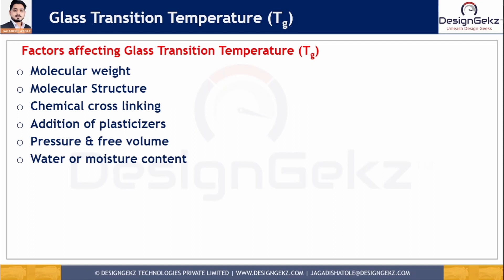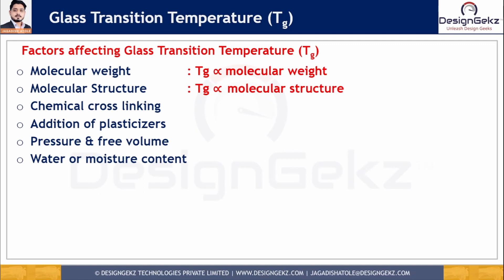For molecular weight: in straight-chain polymers, an increase in molecular weight leads to a decrease in chain-end concentration, resulting in a decrease of free volume at the end group, which leads to an increase in Tg. So Tg is directly proportional to molecular weight. For molecular structure, increased molecular complexity increases Tg due to decreased mobility — Tg is directly proportional to molecular structure. For chemical cross-linking, increased cross-linking decreases mobility, decreases free volume, and increases Tg due to stiffness — Tg is directly proportional to degree of cross-linking. Addition of plasticizers increases free volume, resulting in a decrease in Tg.